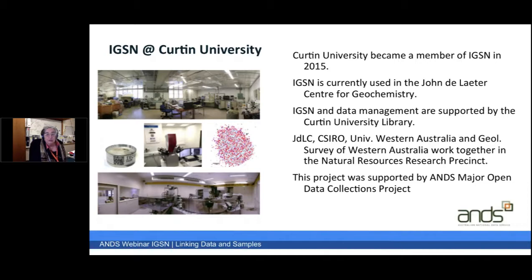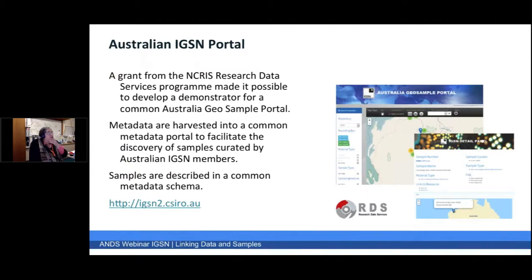CSIRO and the Geological Survey of Western Australia are also working together. With the three agents, Curtin is only operating for Curtin University, and we're hoping to expand that so it becomes more available to the rest of the research community. Additional funding from NCRIS through the research data services project made it possible to develop a demonstrator for a common geosample portal. Metadata from the three agents is harvested into a common metadata portal to discover samples created by any Australian IGSN member. The Australians have agreed to a common metadata schema, even with quite a diversity of samples, and we hope that as this grows it will be the place you go to find information about any physical sample.